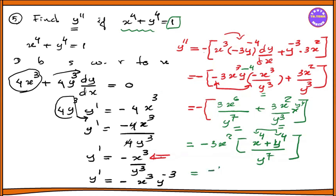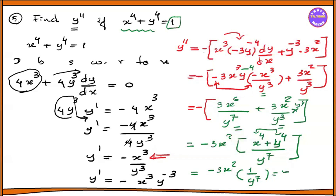So this is minus 3x² into 1 by y power 7. So this is minus 3x² by y power 7.